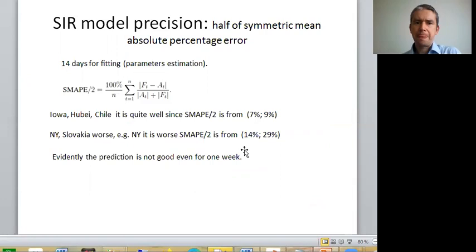From the perspective of recent COVID outbreaks, we will take some aggregation function which is measuring the model precision, like symmetric mean absolute percentage error (SMAPE), which is defined here. Ft is forecasted at time t, At is actual at time t. We are watching 14-day prognosis and parameter estimation. Iowa, Hubei, and Chile are quite well because this measure is from 7% to 9% quality (lower is better; zero would be perfect fit). But New York and Slovakia are much worse, from 14% to 29%. This is a pretty big measure. We can understand this can be caused by all the issues I have been discussing on previous slides. Evidently, prediction is not good even for one week of the SIR model. Possibly discretization also takes a role in this.